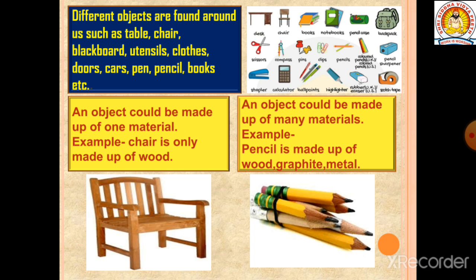Here you can see pictures of all the objects which we see around us. An object which is made up of only one material — for example, a chair made up of wood. So the object is a chair and the material is wood — just one material.